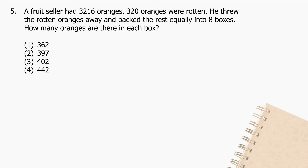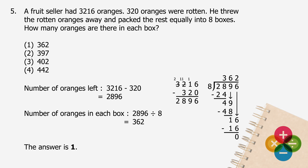Question 5: A fruit seller had 3,216 oranges. 320 oranges were rotten. He threw the rotten oranges away and packed the rest equally into 8 boxes. How many oranges are there in each box? The number of oranges left will be 3,216 minus 320, and the difference is 2,896. The number of oranges in each box will be 2,896 divided by 8, and the quotient is 362. The answer is 1.